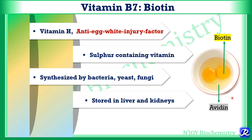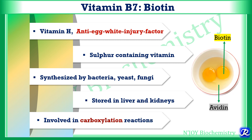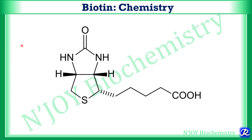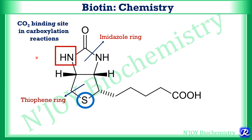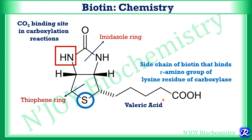Biotin is stored in liver and kidneys and it is involved in various carboxylation reactions. The structure of biotin consists of an imidazole ring fused with a thiophene ring, where sulfur is present. This is the carbon dioxide binding site in carboxylation reactions. The side chain is valeric acid and this side chain of biotin binds with the epsilon group of lysine residue of carboxylase.